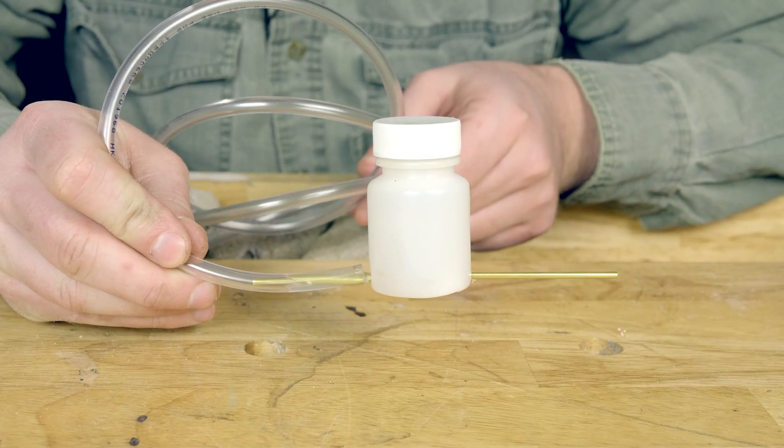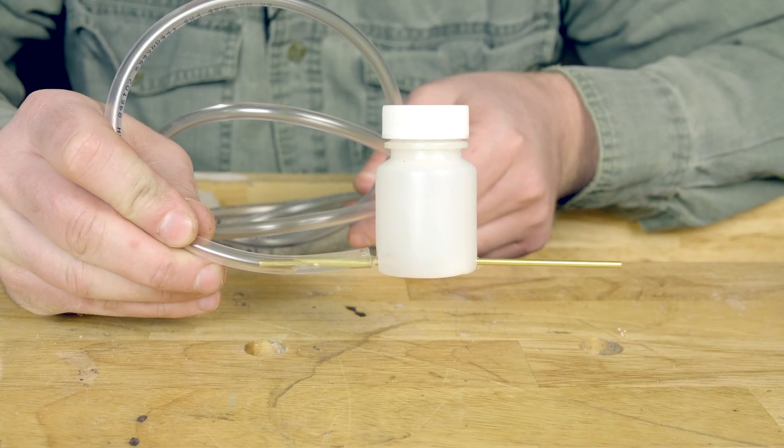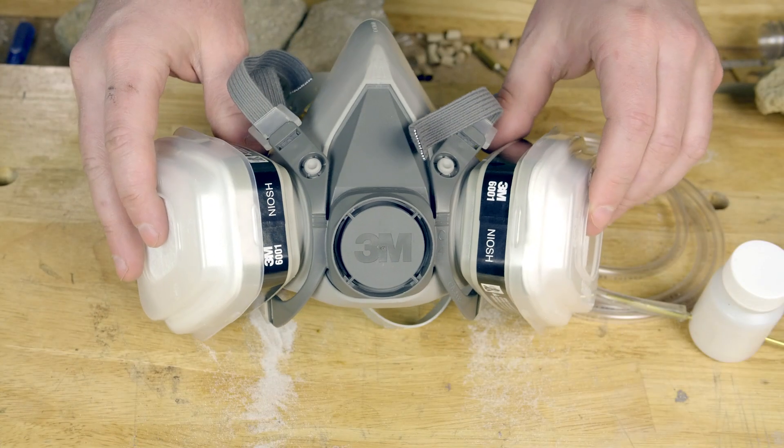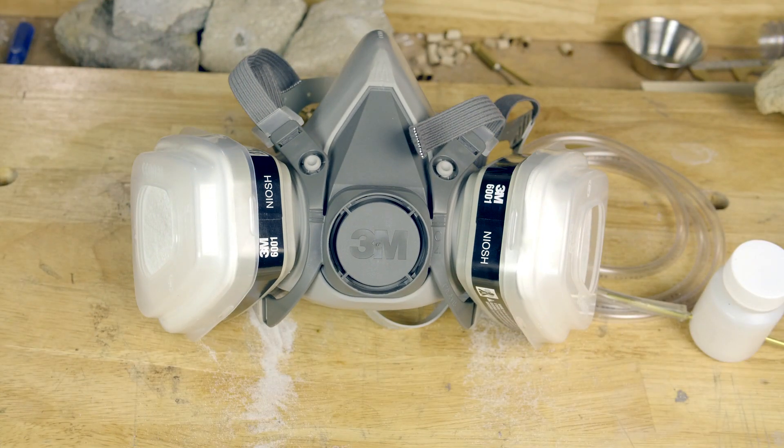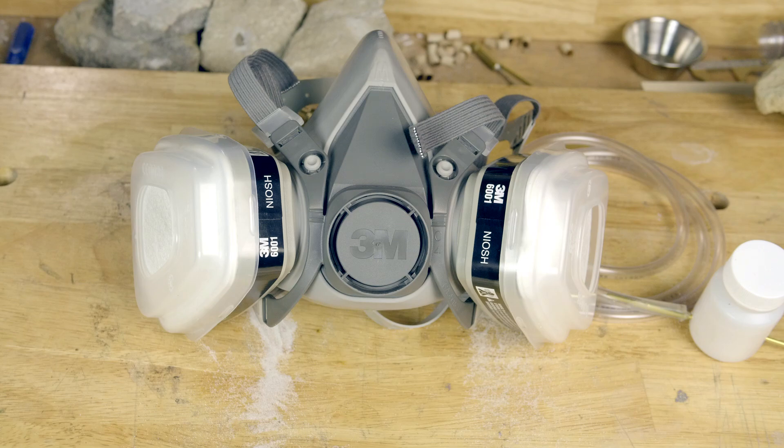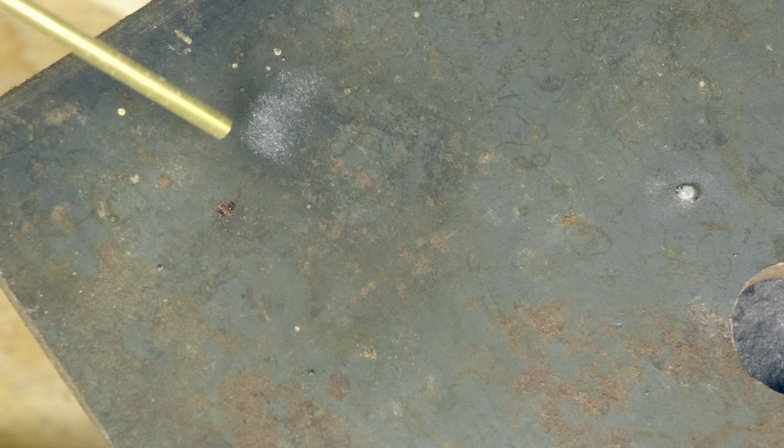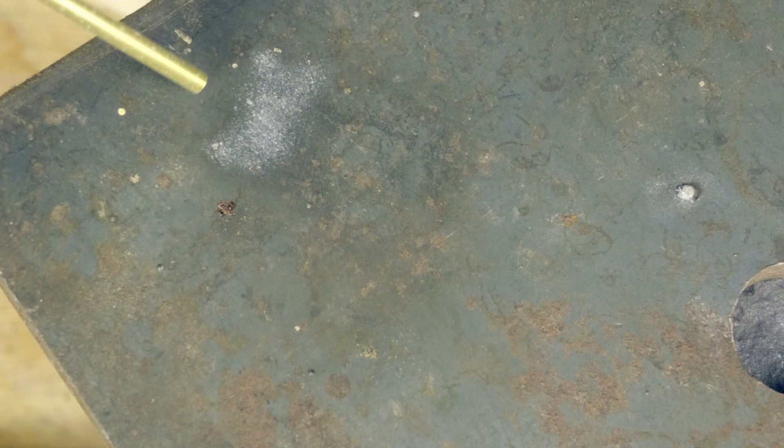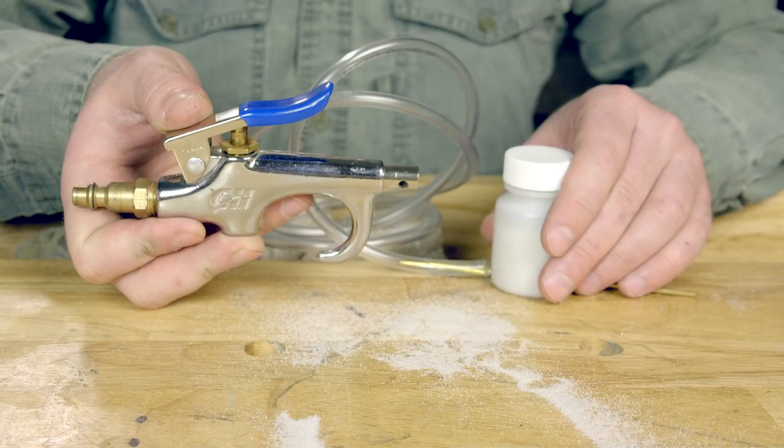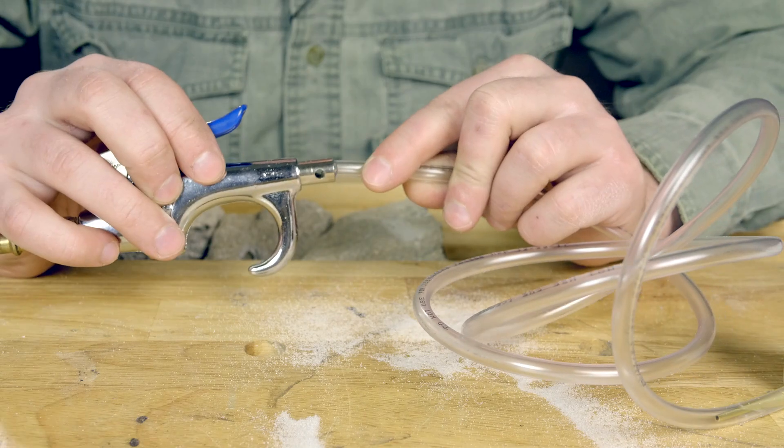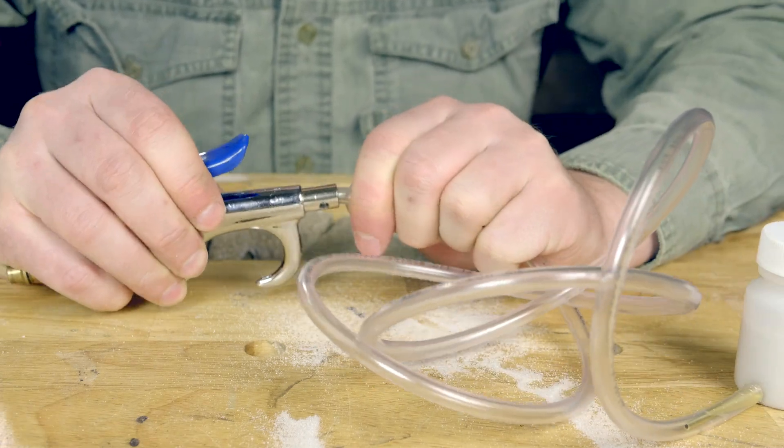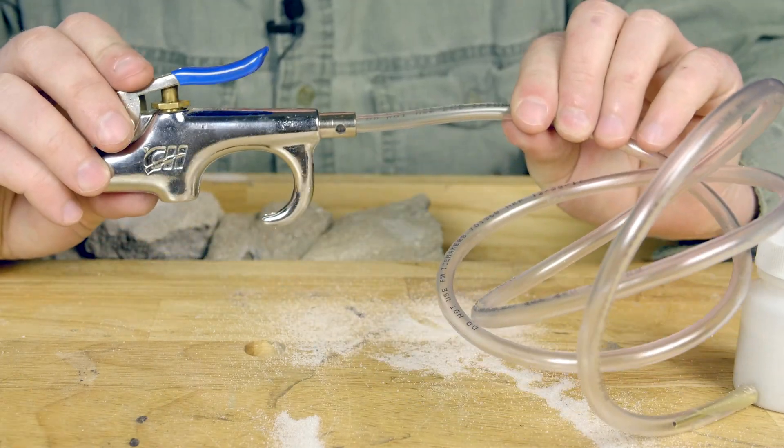Before you go sandblasting anything though, it's extremely important for your safety to wear a respirator. If you don't have breathing protection, don't use a sandblaster. Likewise, full laboratory safety goggles are required to protect your eyes. You need an air compressor to make this work, and I selected a vinyl tube that would fit tightly into the mouth of an air compressor blow gun, which will act as my control valve.